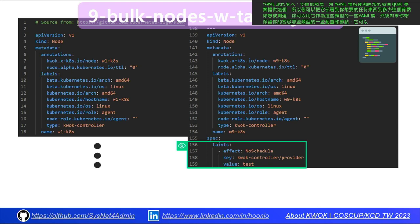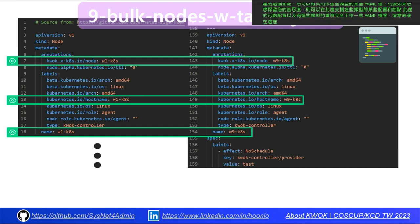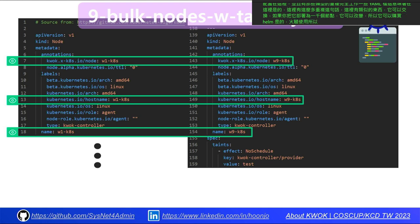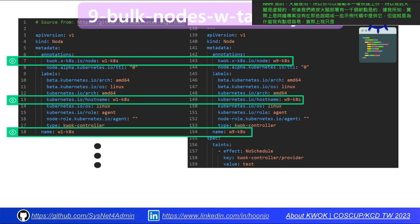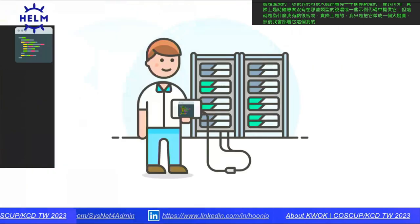You can support taint configuration in the YAML file for toleration and other configurations. Since this results in a very repetitive YAML file when deploying 1000 nodes, I use Helm for templating. I built a Helm chart to rapidly deploy 1000 nodes. As far as I know, the KWOK project doesn't provide a Helm chart, so I created my own sample Helm chart.